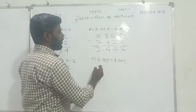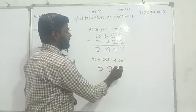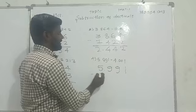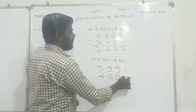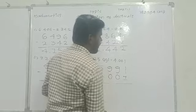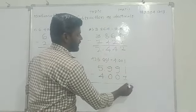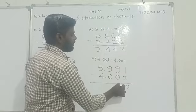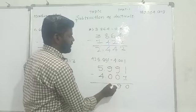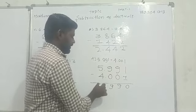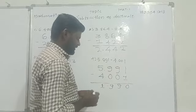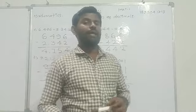Last question. 5.991 minus 4.001. 1 minus 1 is 0. 9 minus 0 is 9. 9 minus 0 is 9. Decimal point, 5 minus 4 is 1. Yes. Answer is, dear students, 1.990.